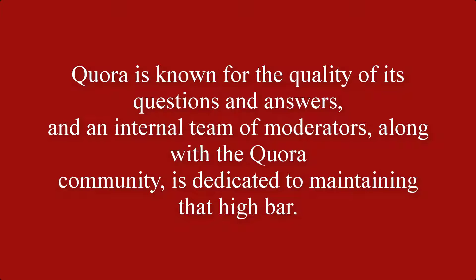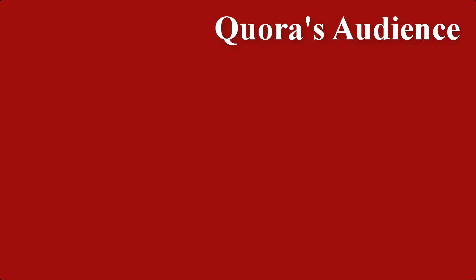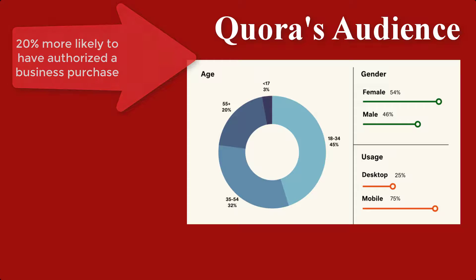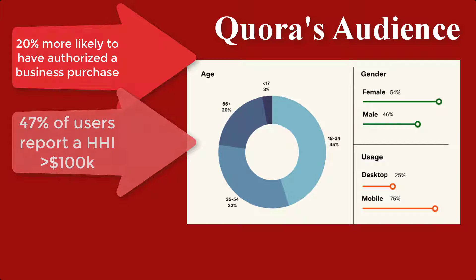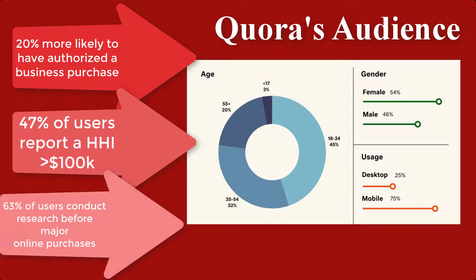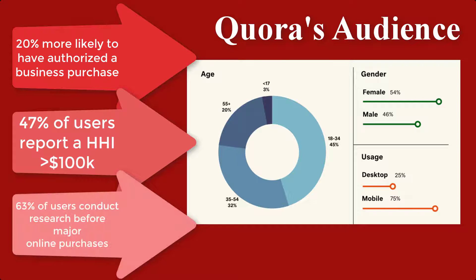Quora is known for the quality of its questions and answers, and an internal team of moderators along with the Quora community is dedicated to maintaining that high bar. Here's Quora's audience at a glance: they are 20% more likely to have authorized a business purchase, 47% of users report a household income greater than $100,000, and 63% of users conduct research before major online purchases.